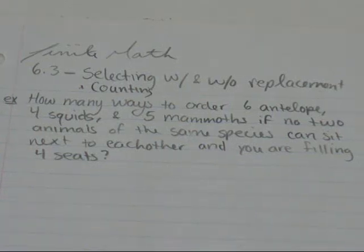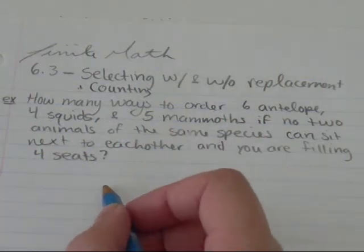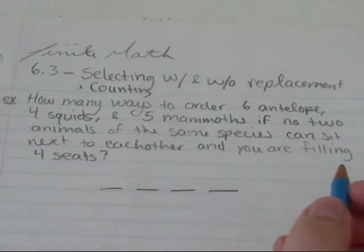I have here, how many ways are there to order six antelope, four squids, and five mammoths if no two animals of the same species can sit next to each other and they're taking up four seats? So I've got four seats that I want to fill with four animals.